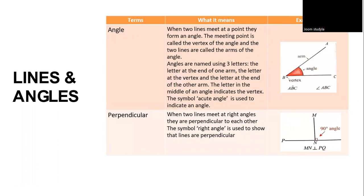When two lines meet at a point, they form an angle. The meeting point is called the vertex, and the two lines are called the arms of the angle. Angles are named using three letters: the letter at the end of one arm, the letter at the vertex, and the letter at the end of the other arm. For example, ABC — B is the vertex. The symbol for an acute angle is used to indicate an angle.